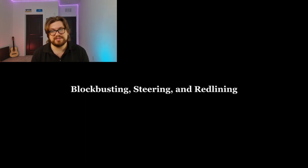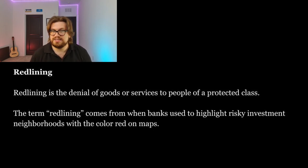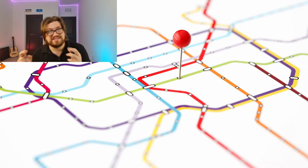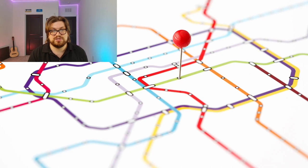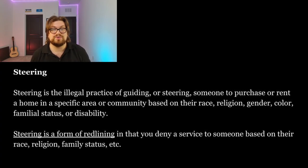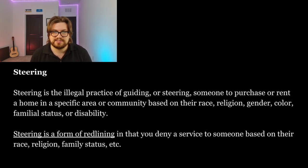Redlining is the denial of goods or services to people of a protected class. Redlining in real estate commonly involves lending, which is where its origin began. During the 1920s, banks would literally draw red lines on maps, defining safe and unsafe areas to invest or grant loans. The majority of these red areas were in minority neighborhoods. For the real estate exam, redlining will likely refer to discrimination in the lending industry by not granting loans to people of a protected class. Steering is an illegal practice of guiding or steering someone to purchase or rent a home in a specific area or community based on their race, religion, gender, or any protected class. Steering is a form of redlining in that you deny a service to someone based on their protected class.